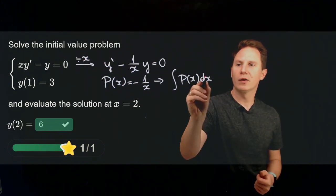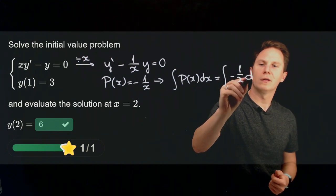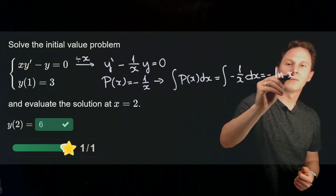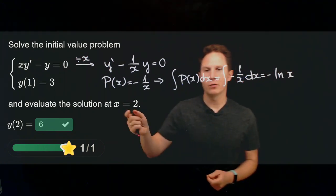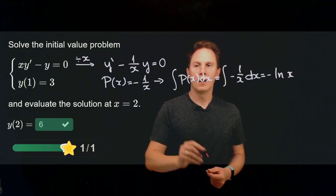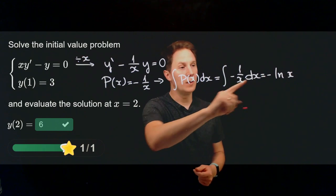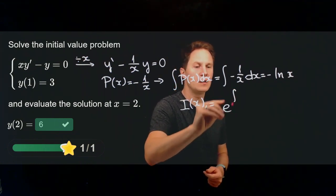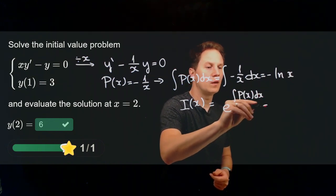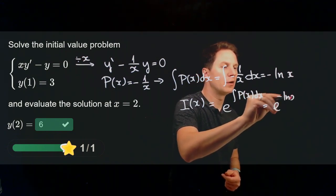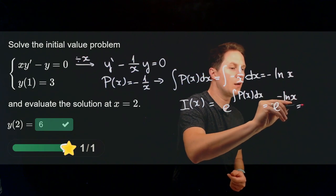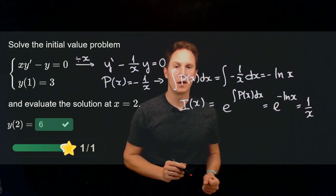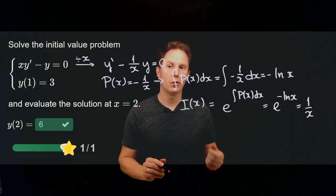We need to find the indefinite integral of p of x dx, which is the integral of negative 1 over x dx. That equals negative the natural logarithm of x — ignoring absolute values since we only consider positive x values. Raising e to that exponent gives the integrating factor: i of x equals e to the negative natural logarithm of x, which simplifies to 1 over x using laws of logarithms.